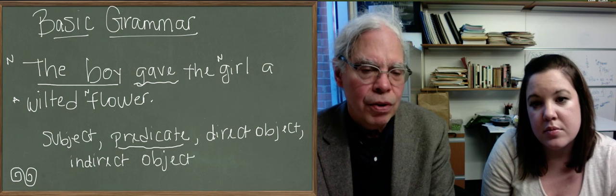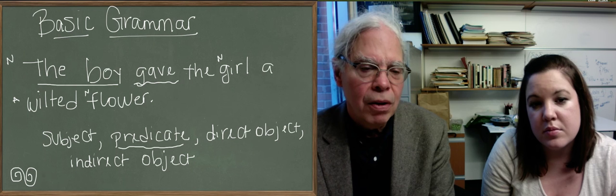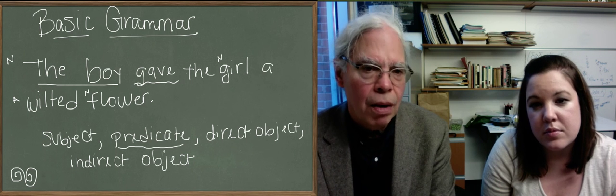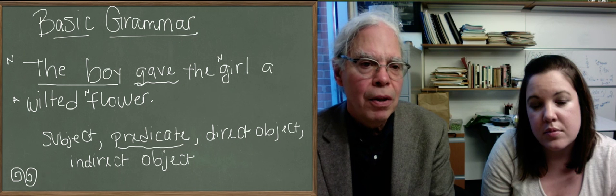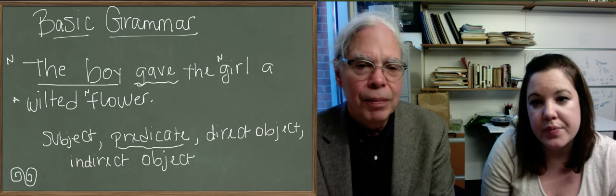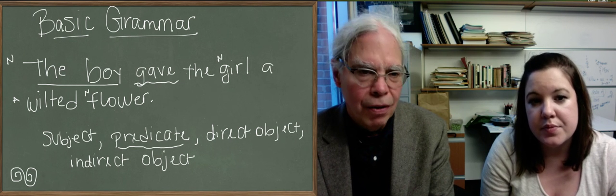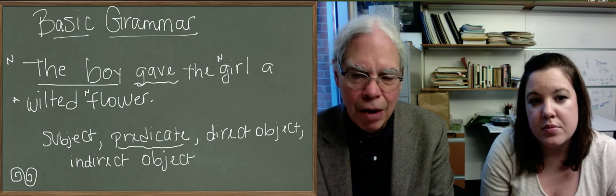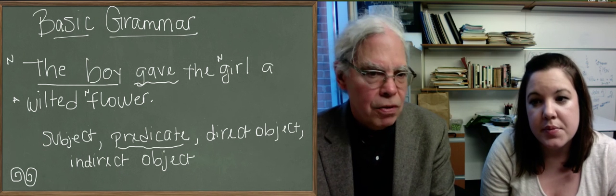What's the object that corresponds to the subject and that's direct, a direct object? The boy gave the girl a wilted flower. I think it's tricky. And I think you might answer girl or you might answer flower. In this case, it's flower.